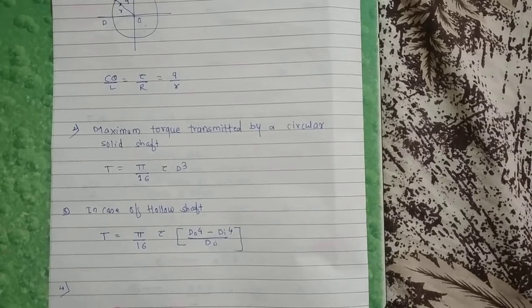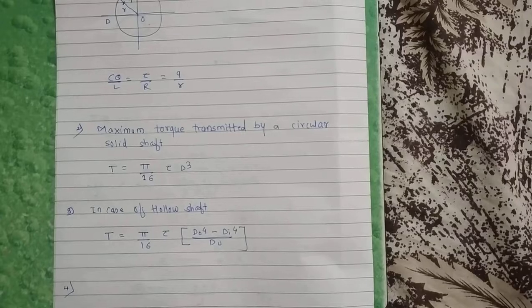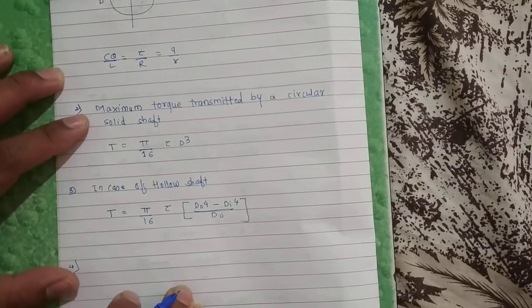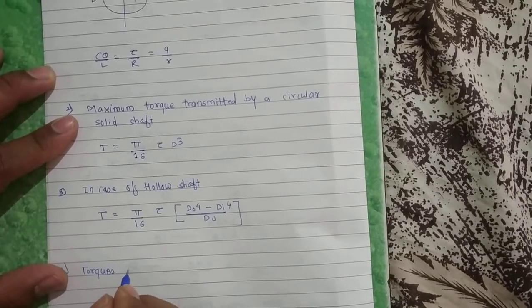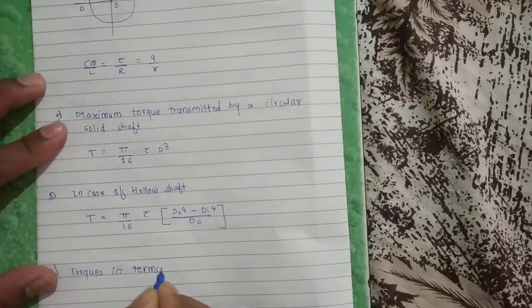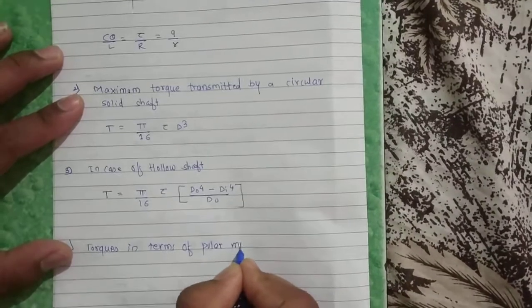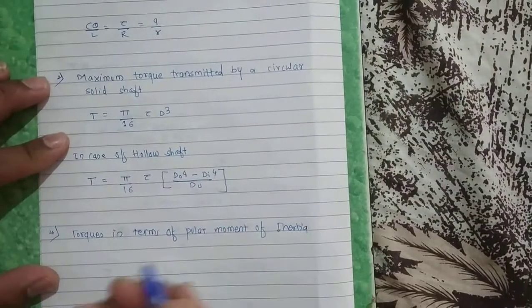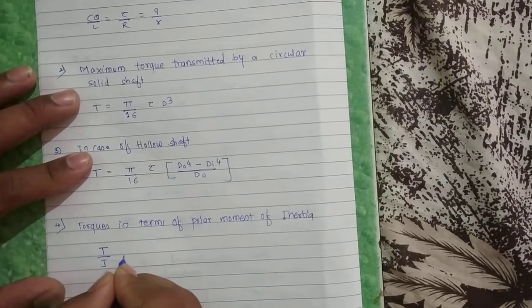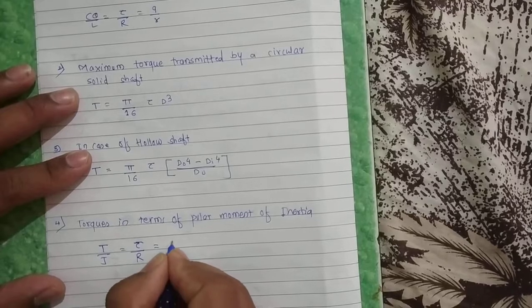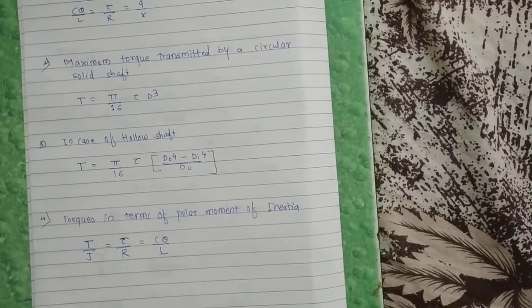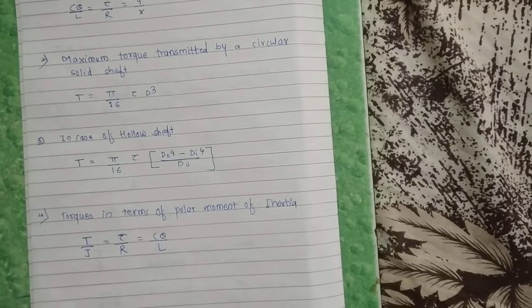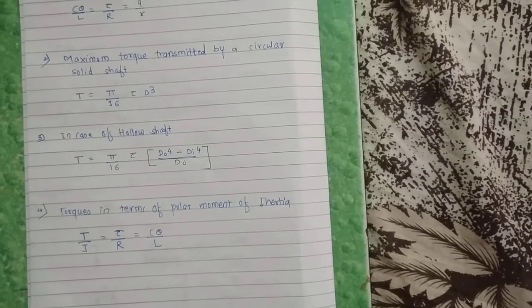This formula is very important. Torque in terms of polar moment of inertia: the torsion equation is T/J = tau/R = C·theta/L. These are the key formulas: first, the derivation formula T/J = tau/R = C·theta/L, which will be asked in examinations; second, T = (π/16) · tau · d³ for solid shafts; and the corresponding formula for hollow shafts.